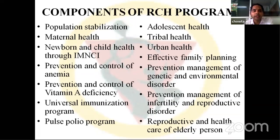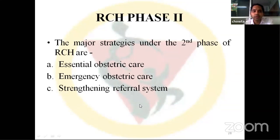Components of the RCH program include population stabilization, maternal health, newborn and child health through IMNCI (integrated management of neonatal and childhood illness), prevention and control of anemia, prevention and control of vitamin A deficiency, universal immunization program, pulse polio program, adolescent health, tribal health, urban health, effective family planning, prevention and management of genetic and environmental disorders, prevention and management of infertility and reproductive disorders, and reproductive health of elderly persons. RCH Phase 2 major strategies are essential obstetric care, emergency obstetric care, and strengthening of the referral system.